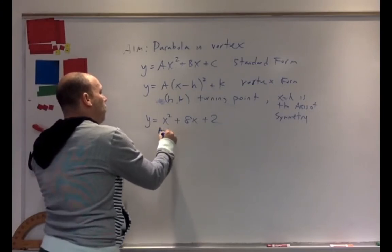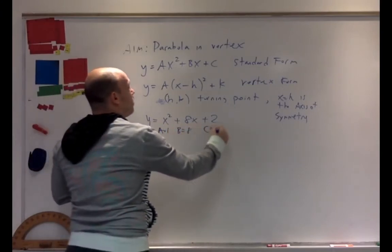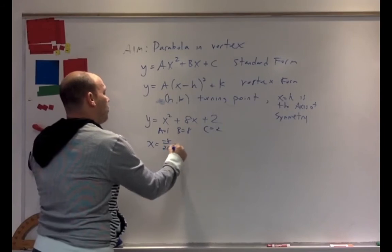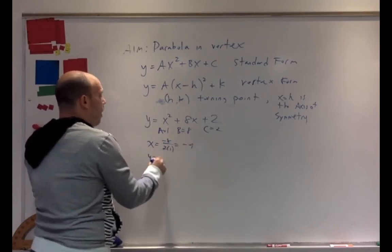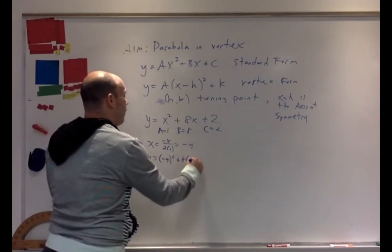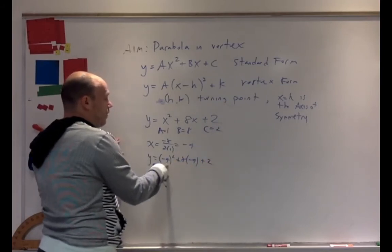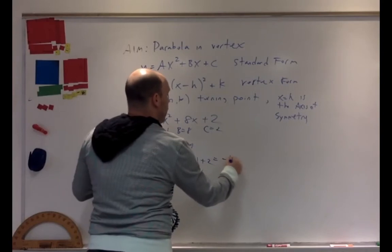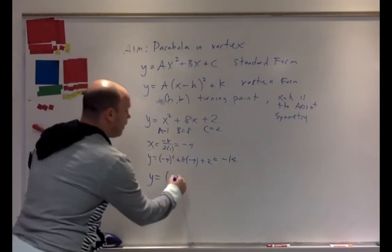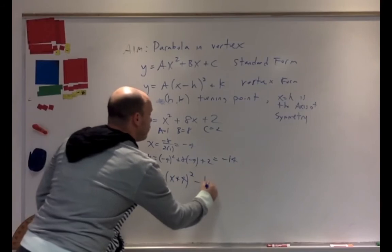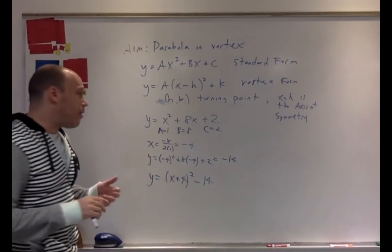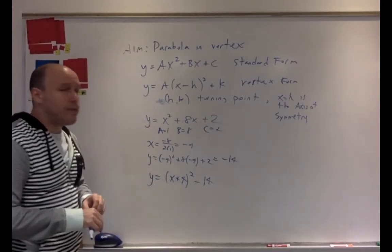I know that my A is 1, my B is 8, my C is 2. My axis of symmetry has the equation X equals negative 8 over 2 times 1, which is negative 4. I find Y by plugging negative 4 back into the original equation: negative 4 squared plus 8 times negative 4 plus 2, giving negative 14. Therefore the equation in vertex form is Y equals (X plus 4) squared minus 14.